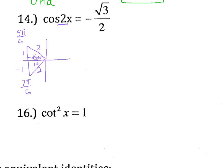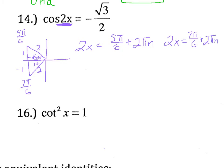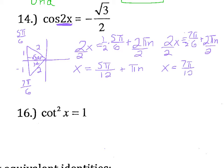Now that we know our two answers, we need to write these in general form in order to divide by 2. So we write 2x equals 5 pi over 6 plus 2 pi n, and 2x equals 7 pi over 6 plus 2 pi n. Now we're ready to divide by 2 to solve for x. Multiplying by 1 half, I get x equals 5 pi over 12 plus pi n, and x equals 7 pi over 12 plus pi n.